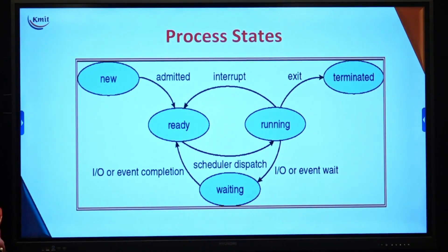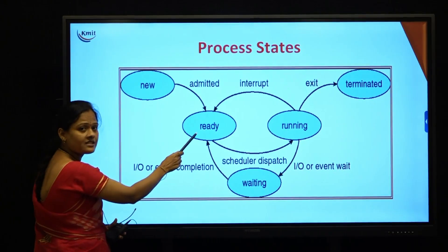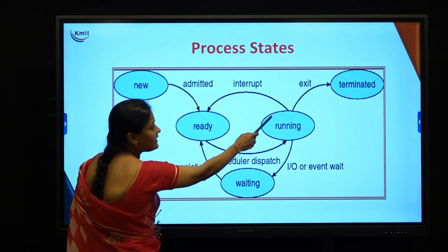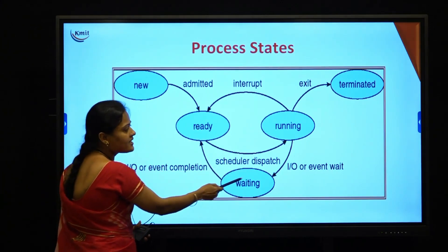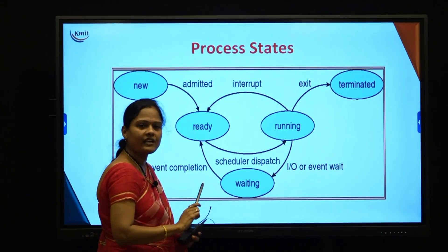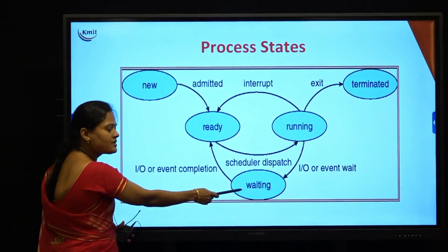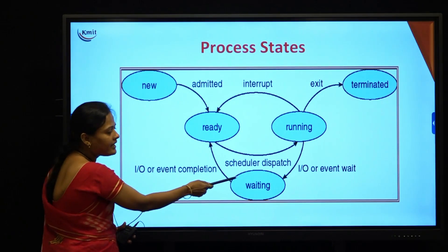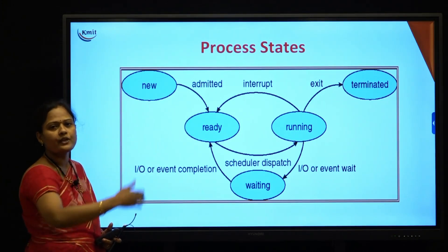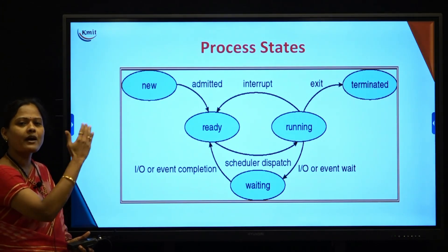This is the state transition diagram of a process. Starting from new, when ready to execute it moves into main memory in the ready state. When taken by the CPU it enters the running state. From running it can move back to the ready state or to the waiting state depending on I/O service or an interrupt. If the process completes without interruption, it moves to the terminated state. Importantly, when a process is in the waiting state and an event occurs, it is not moved directly to the running state — it must go back to the ready state first, and from ready it can then move to running.